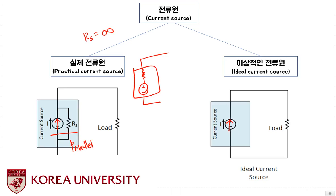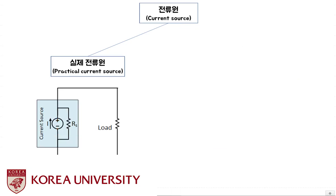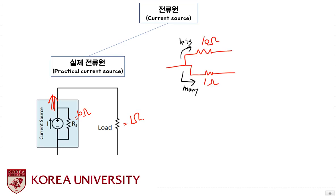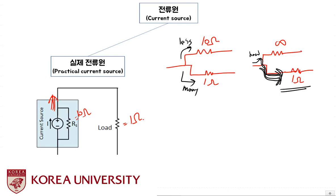We can prove why the internal resistance of an ideal current source equals infinity by two methods. First, by using the current property: current dislikes high resistance. Consider a circuit with two resistors in parallel — 10 ohms and 1 ohm. More current flows into the 1 ohm resistor because current favors less resistance. If the internal resistance keeps increasing toward infinity, it becomes very difficult for current to flow through it, so all the current flows entirely into the load resistor of 1 ohm.